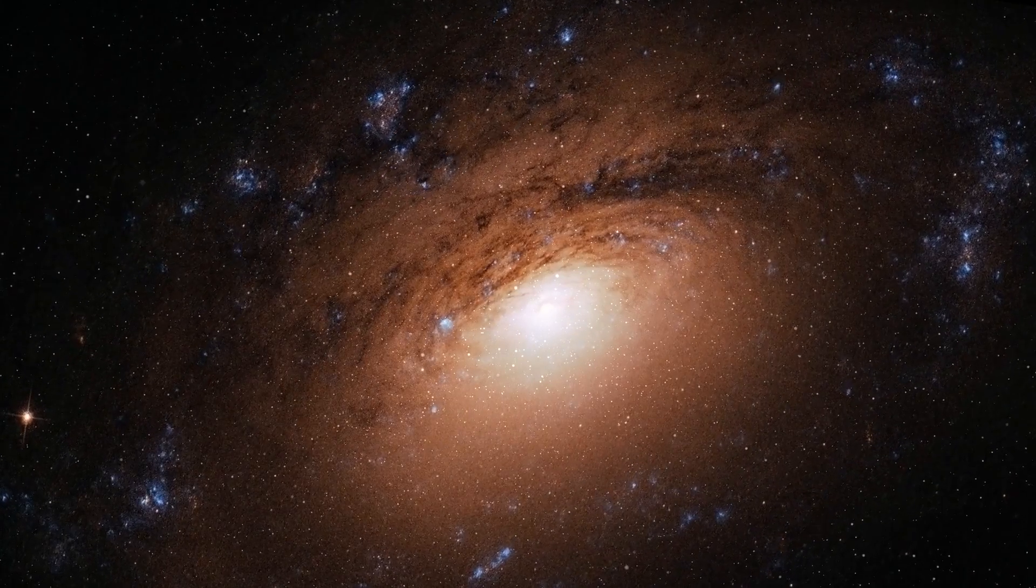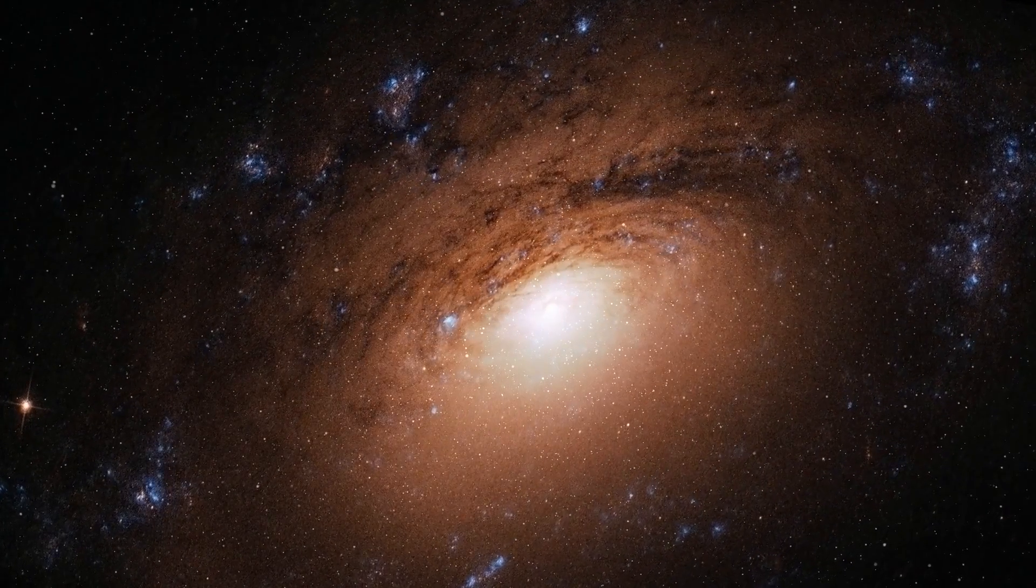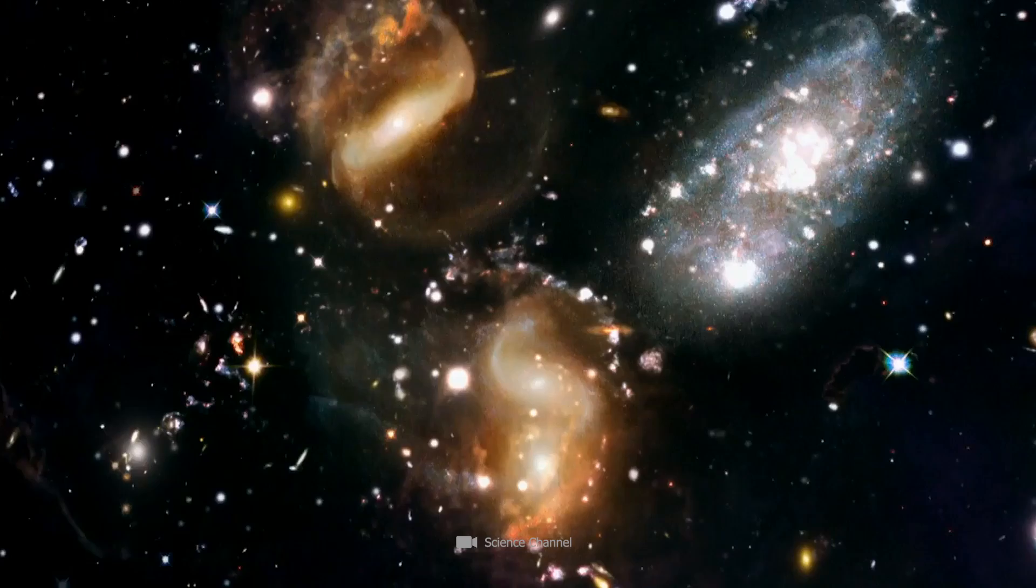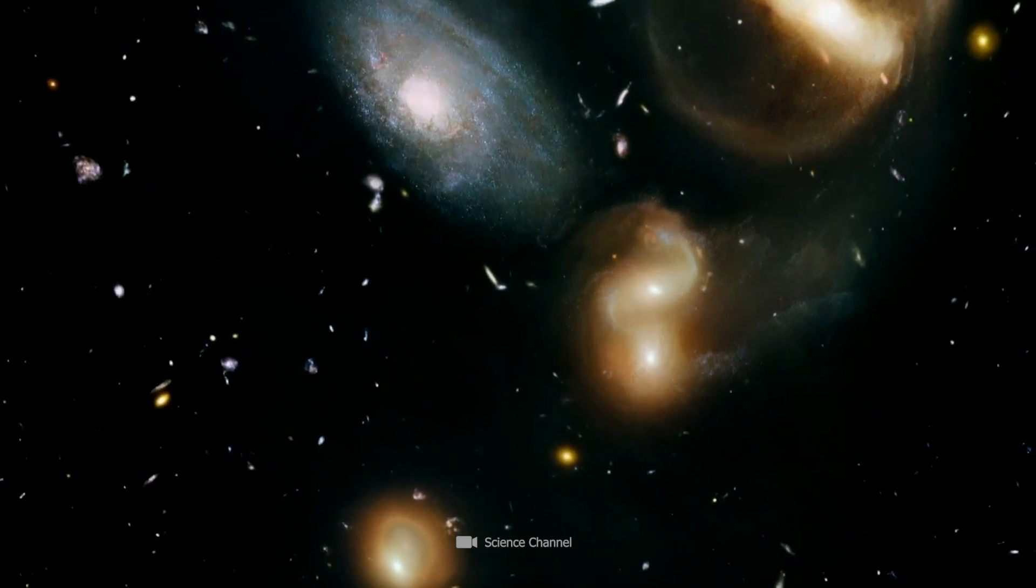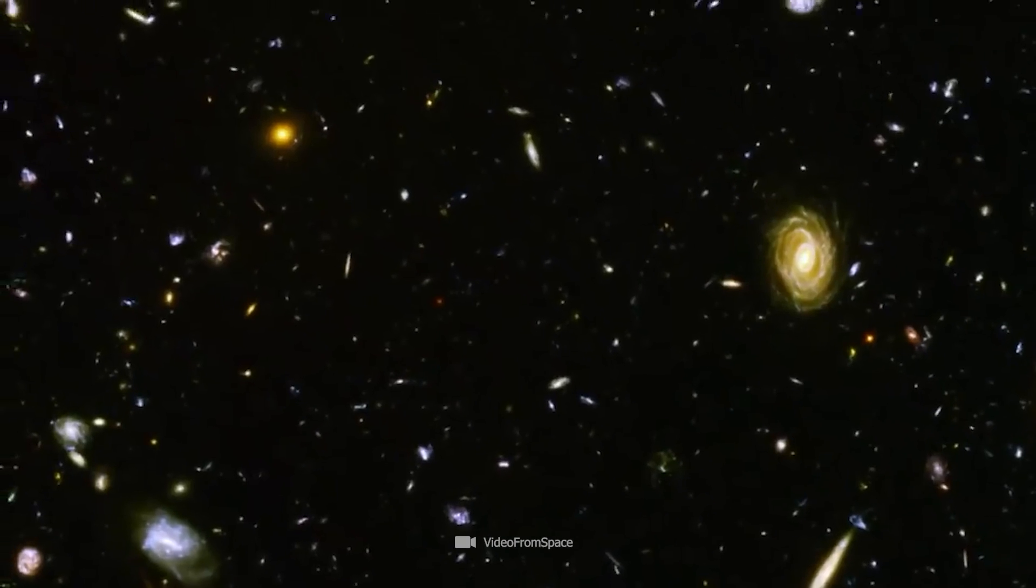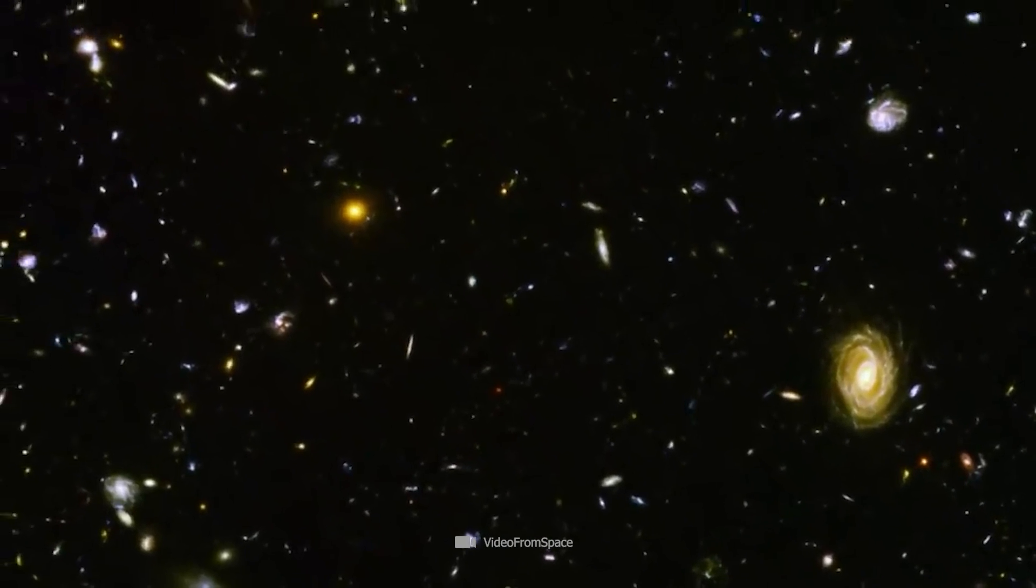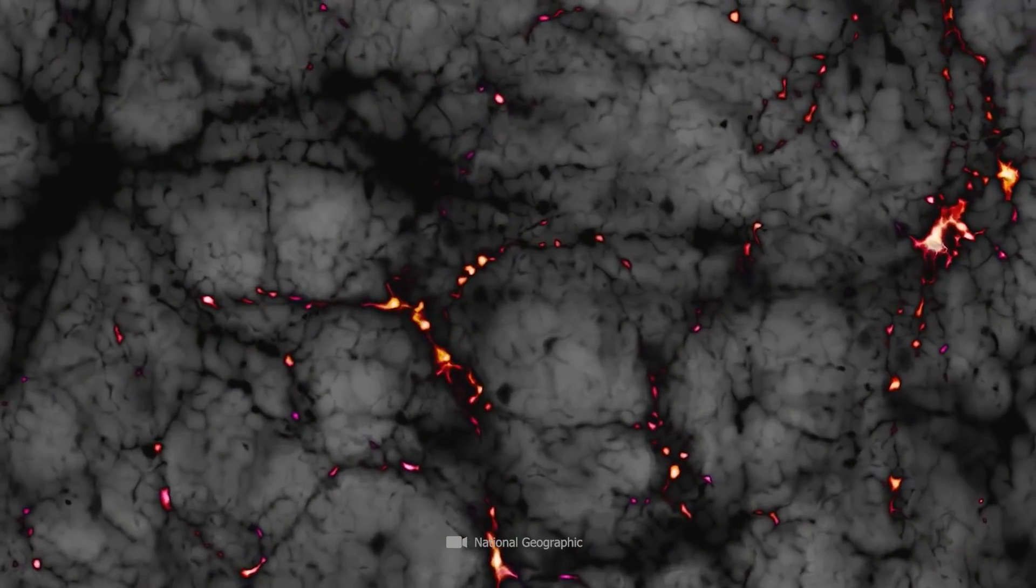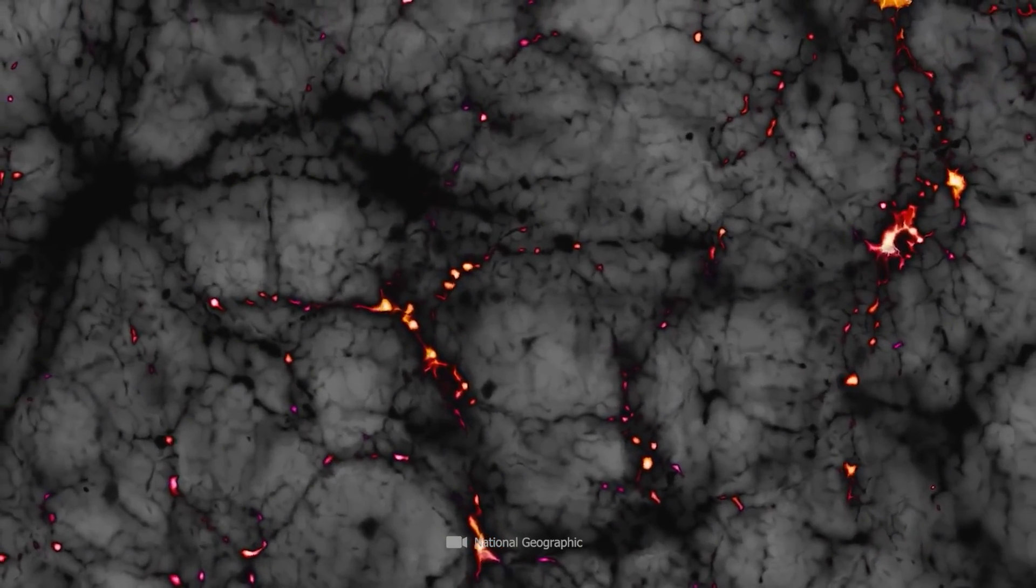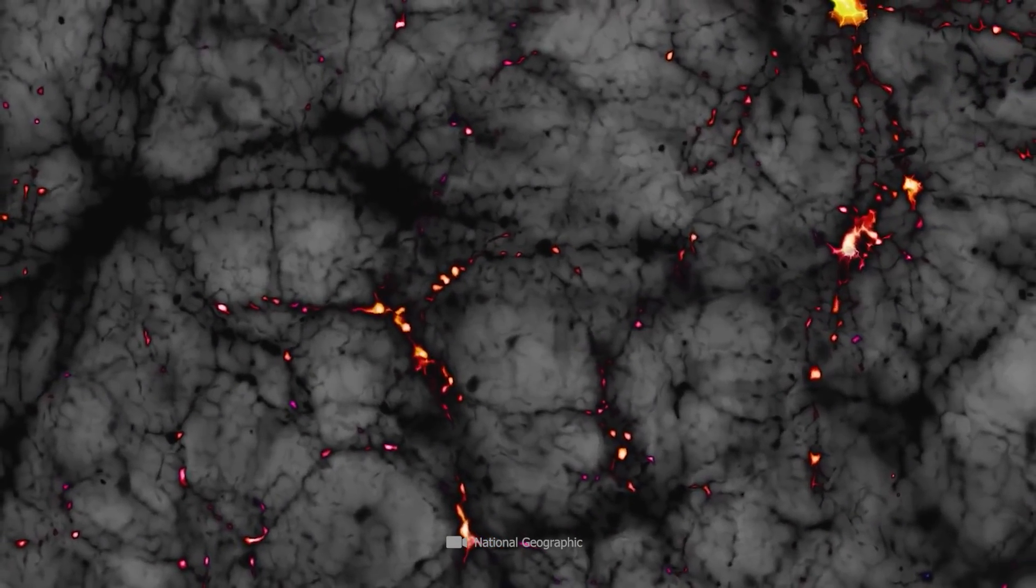Groups of galaxies form gigantic galaxy clusters, and these belong to even larger structures. If we take the known structures in the universe together and create a map, images emerge that are clearly reminiscent of organic structures. Let's be honest, if you didn't know that you were looking at a map of the structures of our universe, you would think of an anatomical illustration, wouldn't you?